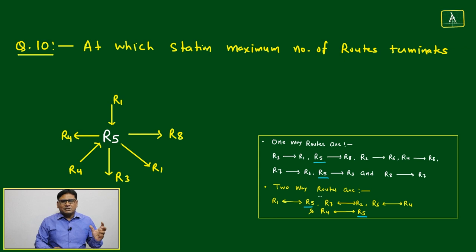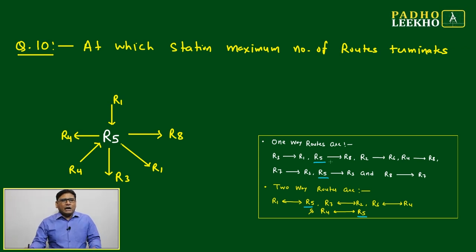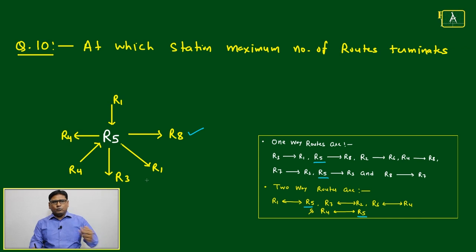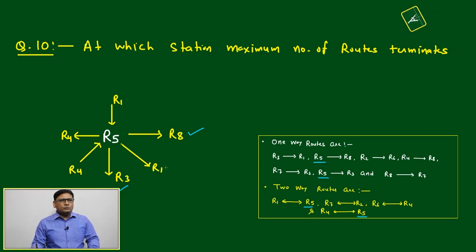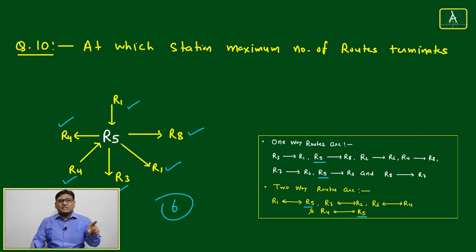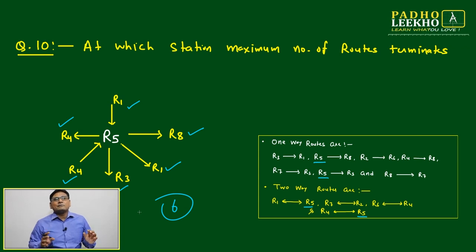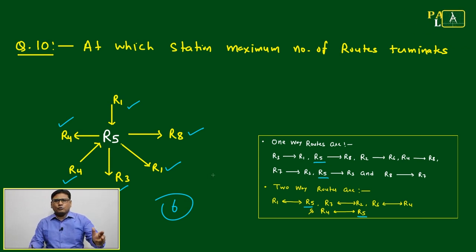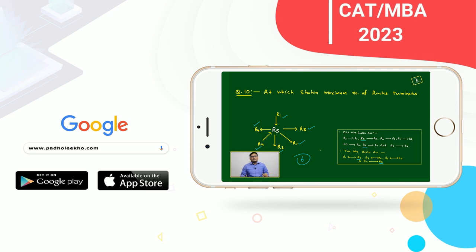Looking at R5: outgoing routes include R5 to R8, R5 to R3, and R5 to R1 (three going out). Incoming routes include R1 to R5 (two-way, so one coming in) and R4 to R5 (two-way, so one coming in). Total: six rail connections for R5. This is the highest among all eight stations — no other station has six total incoming and outgoing routes.